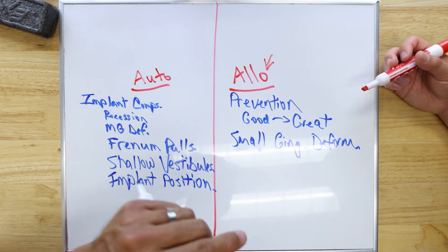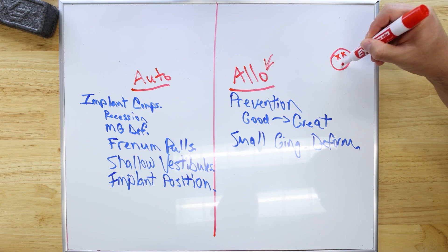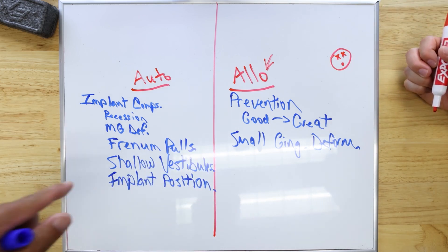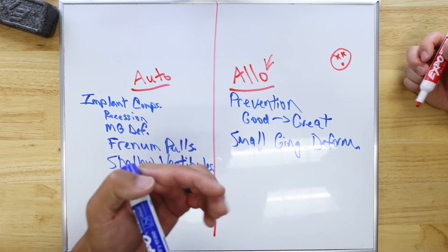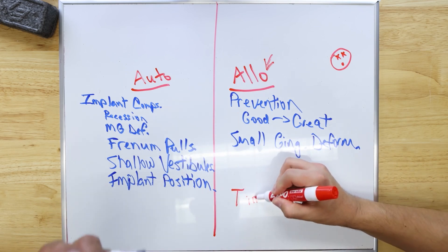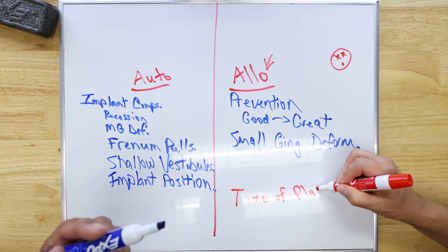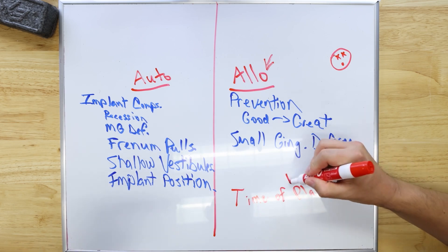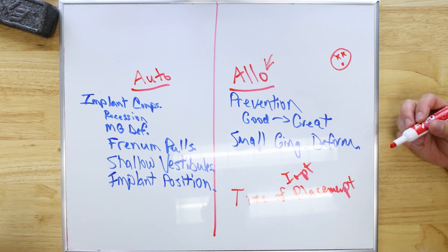When I say catastrophic, I mean the patient could be worse than when they started. That can happen with allografts because when an allograft fails and it necroses, it can take the flap with it. So that's why allografts would be done at time of placement — or any time before that.